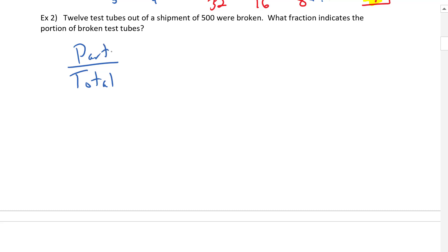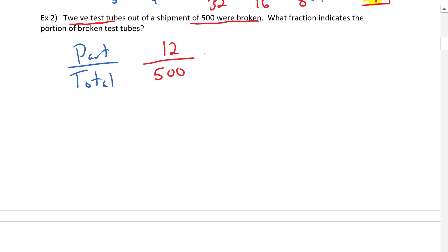Are we referring to the broken test tubes or the ones that are not broken? That would make two different fractions representing the same information, so it's important you clarify what's being asked. Here, our total is 500, so that goes on the bottom, and 12 test tubes were broken, so 12 goes on the top. Ask yourself: can we simplify that any further?